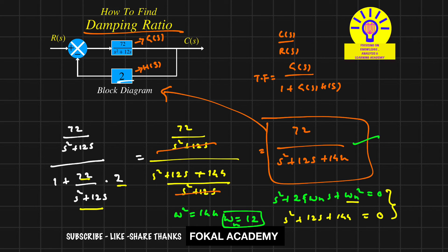Similarly, comparing the s coefficients, we get 2ζωₙ = 12.